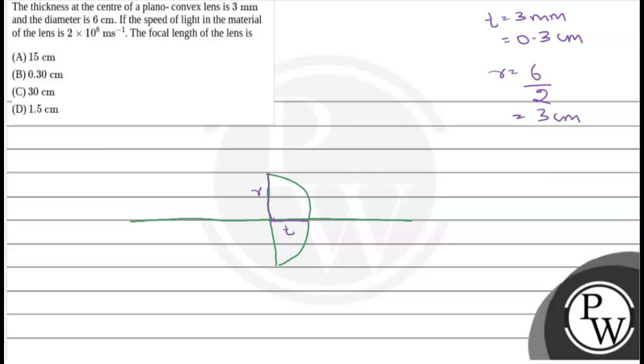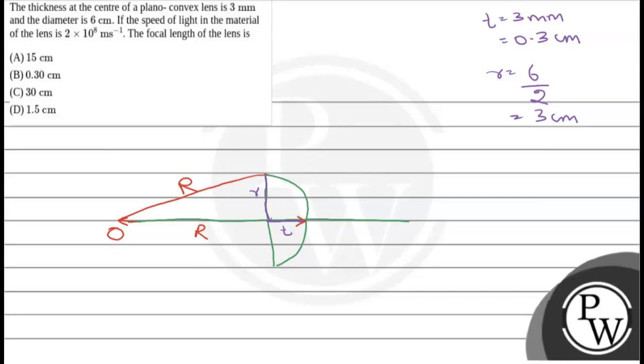Now, the radius of curvature of this lens will be here, let's say this point is O and this is capital R. We can assume a triangle - let's say this is A, this is O, and this is B.